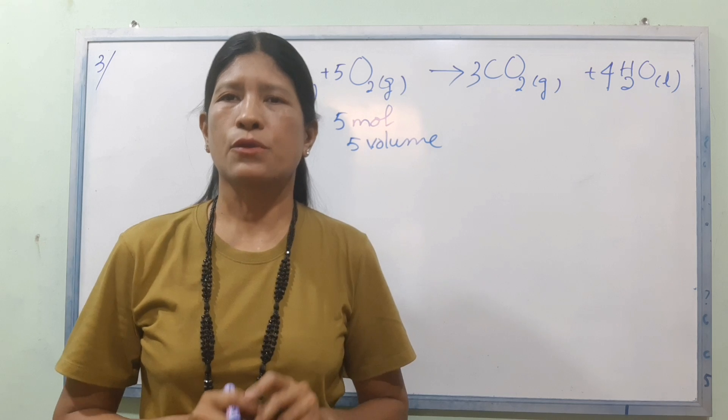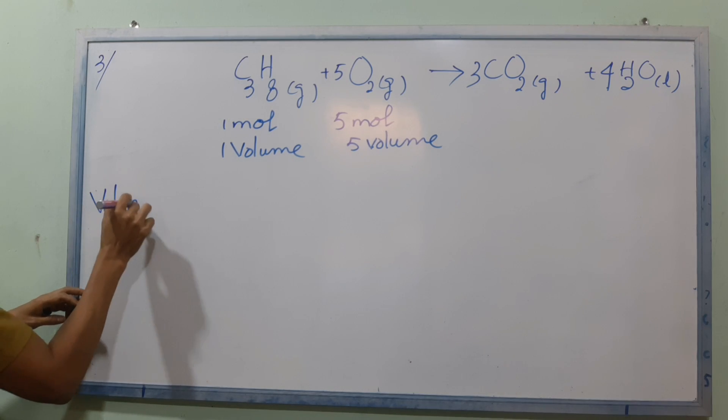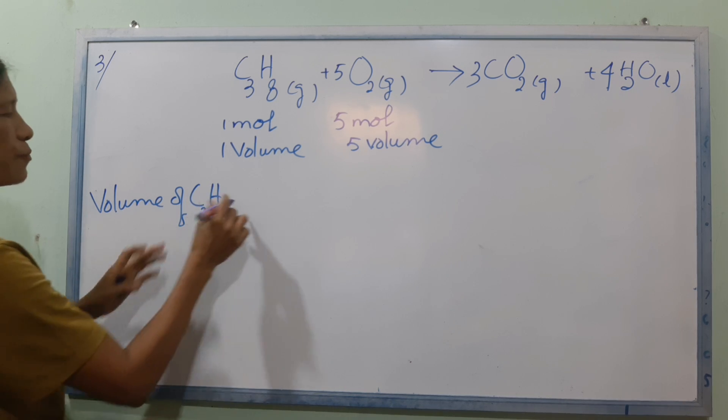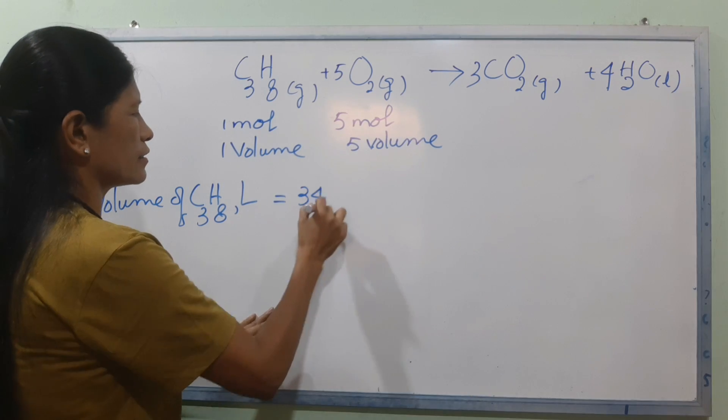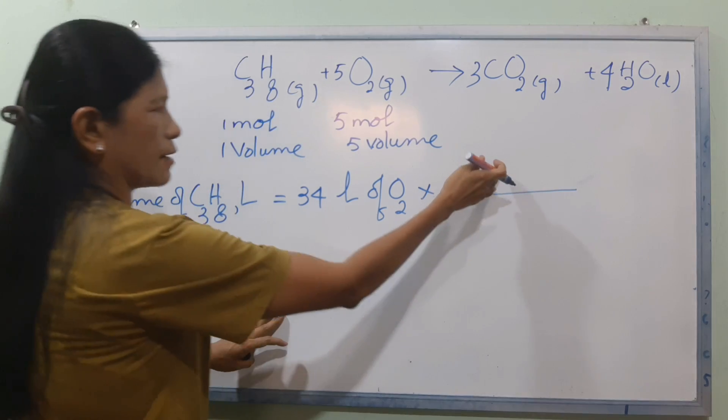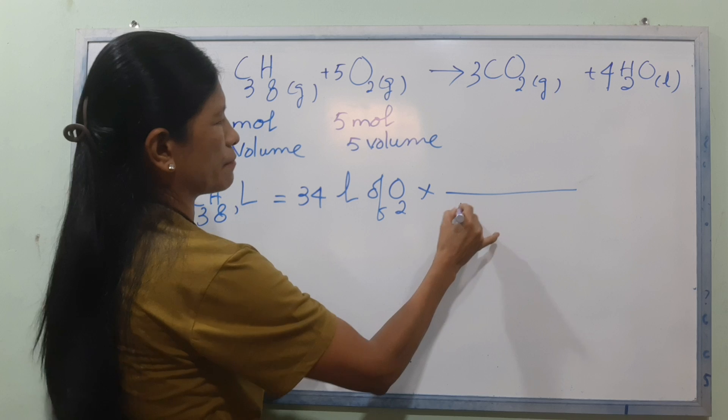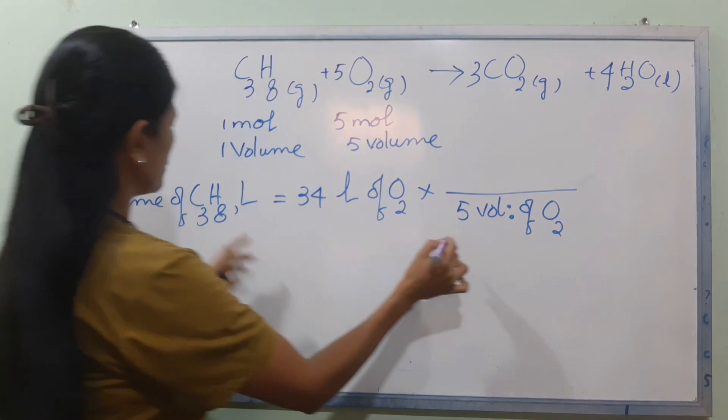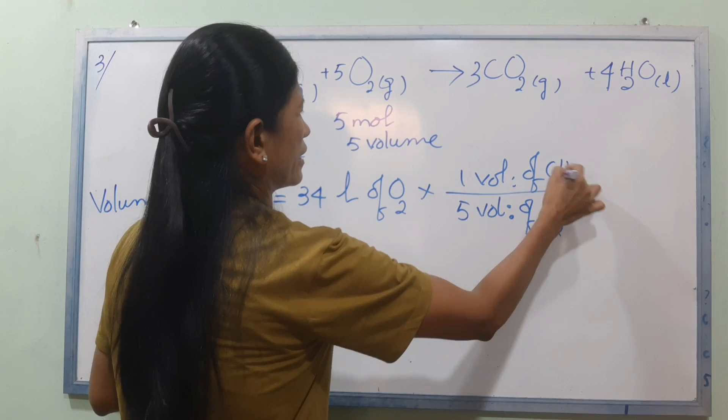Now we will calculate the volume of propane, C3H8. How many liters of propane will be used with 34 liters of oxygen? Propane will use 5 volumes of O2, 1 volume of propane C3H8.